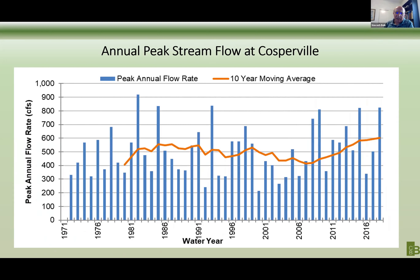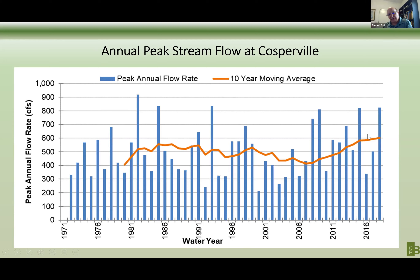Looking at the result of that rainfall in different watersheds, we look at the flow values. We do have a gauge at Cosperville, which is pretty much downstream of the West Lake system — almost the outlet of the system. Here we see the peak annual flow rates depicted from 1971 all the way to 2019. We have had several peak annual rates in the past. The orange color is a 10-year moving average and there's generally maybe some increase in the past, but it's not as significant. If I showed you graphs for other streams in the area, like the Kankakee for instance, you'd see a very increasing trend in that area.